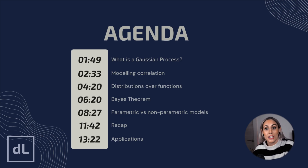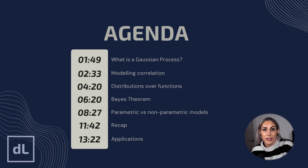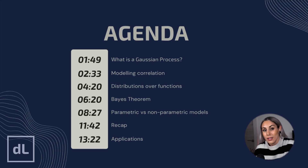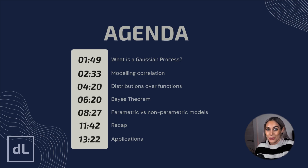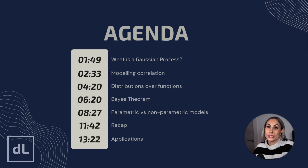We explain how Gaussian processes are non-parametric and provide flexibility in capturing complex relationships and uncertainty in predictions without predefined parameters. This approach contrasts with traditional curve fitting, offering greater adaptability and flexibility, although these come with their challenges as well. Finally, we will discuss situations where using Gaussian processes makes sense, and explore some examples and real-world use cases.